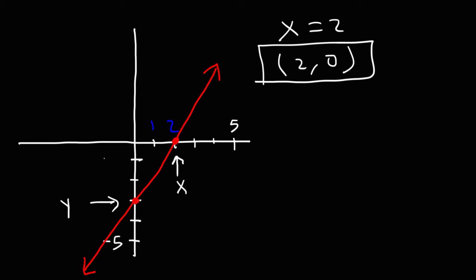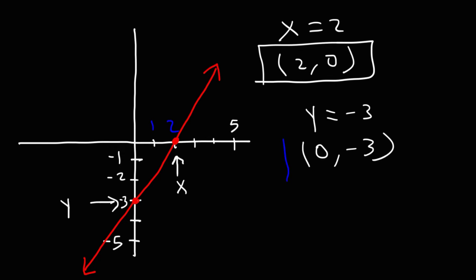It touches the y-axis at negative 3, so the y-intercept is negative 3, or as an ordered pair (0, -3). That's how you can find the x and y-intercepts from a graph.